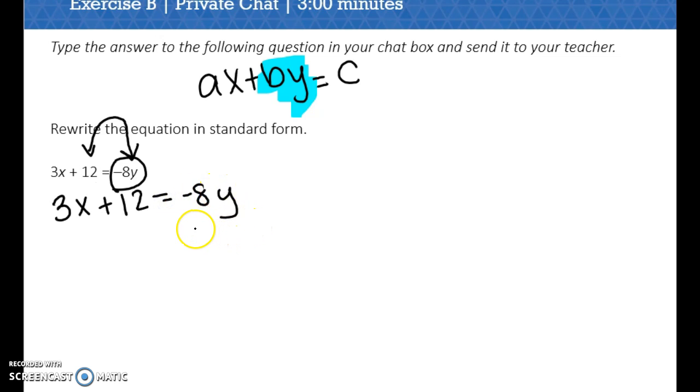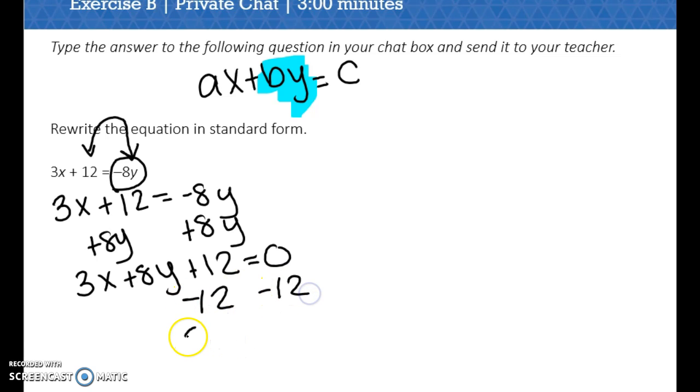So I use those inverse operations. To move the negative 8y, I have to add it. So now I have 3x plus 8y plus 12 equals, well, now there's nothing over on that side. Now this c value is on the left, but I need to move it to the right. So I'm going to subtract 12 from both sides. So 3x plus 8y equals negative 12. So that's how you rewrite in standard form.